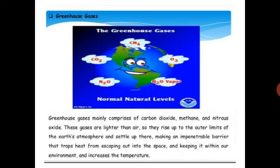Greenhouse gases mainly comprise carbon dioxide, methane, and nitrous oxide. These gases are lighter than air, so they rise up to the outer limits of Earth's atmosphere and settle there, making an impenetrable barrier that traps heat from escaping into space and keeping it within our environment, increasing the temperature.